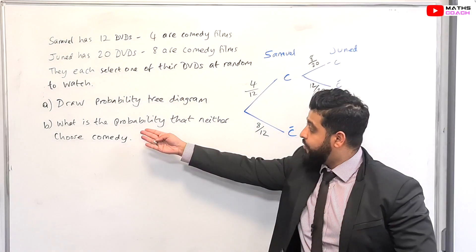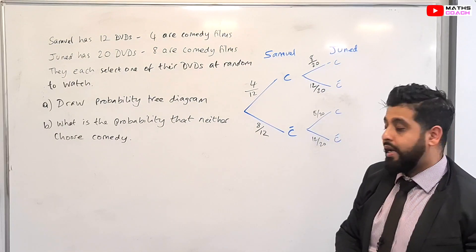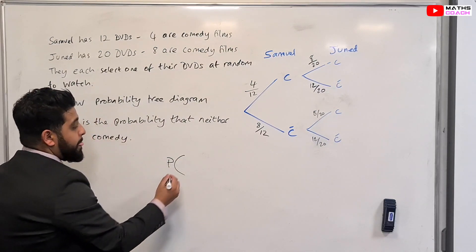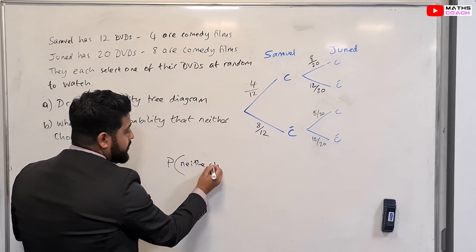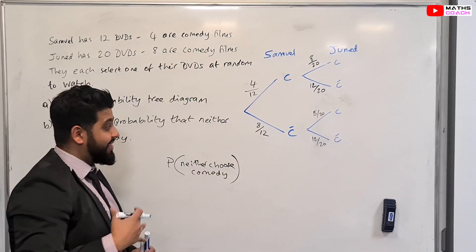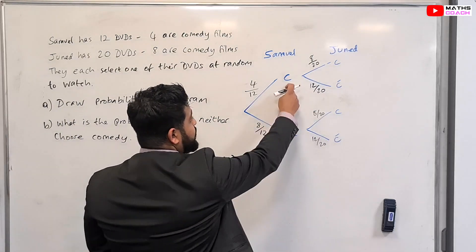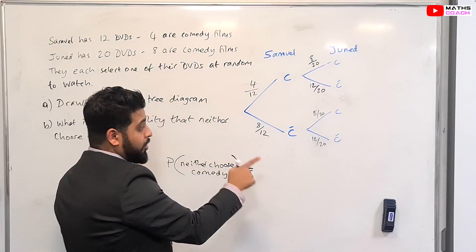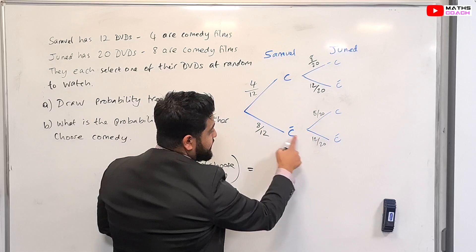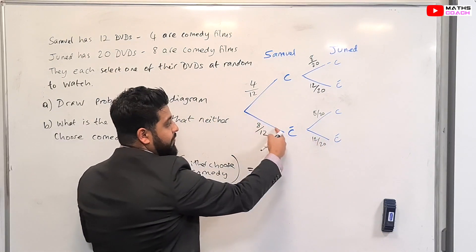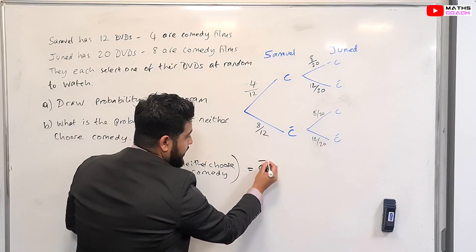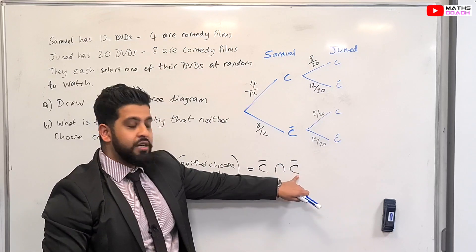Let's go through it and find the probability that neither choose a comedy DVD. So what are we looking for? We are looking for the probability that neither choose comedy. We can also write this using the letters that I've used. So not comedy means Samuel not choosing comedy and Junaid not choosing comedy. So we are looking at this branch, we are looking for this route here. Not choosing for Samuel and not choosing for Junaid. So not comedy and not comedy.